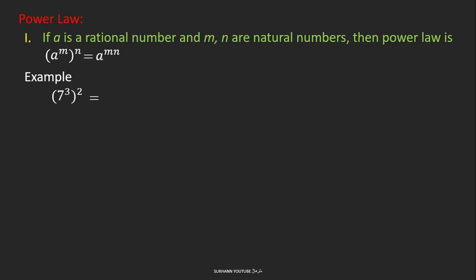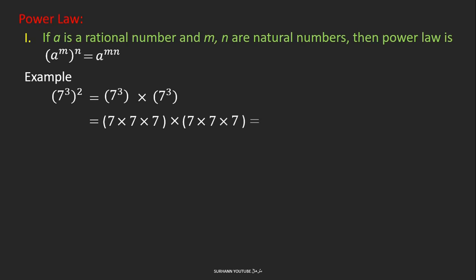To understand this formula, look at the following example: 7 to the power 3, and that whole to the power 2. This means 7 to the power 3 will be multiplied two times. Now 7 to the power 3 means 7 is multiplied three times. You may see that 7 is multiplying 6 times in total. Going back to the formula, if we put m equal to 3 and n equal to 2, we also get 7 to the power 6.